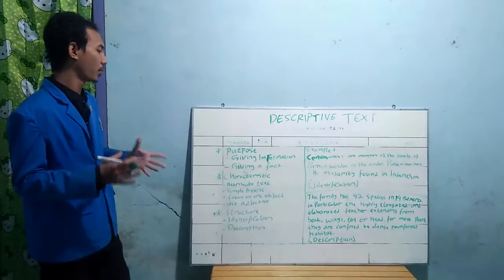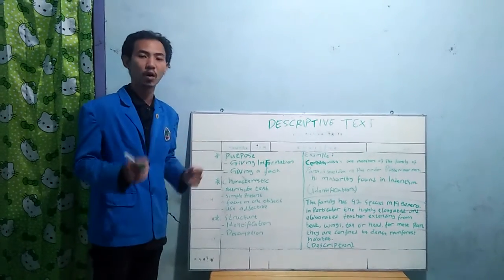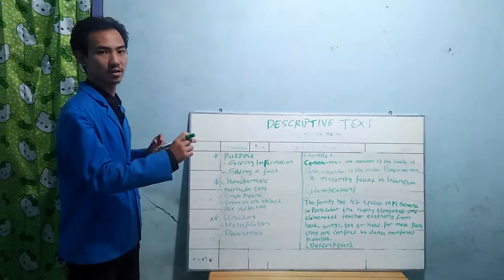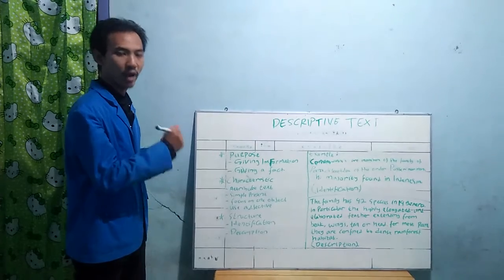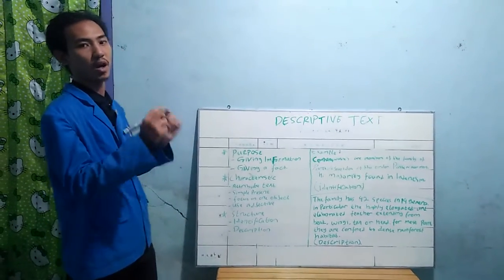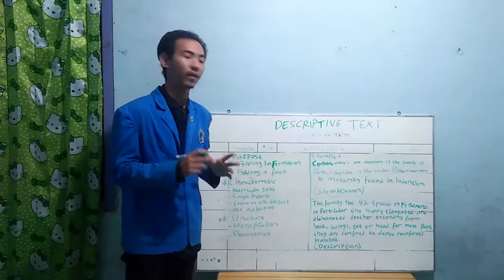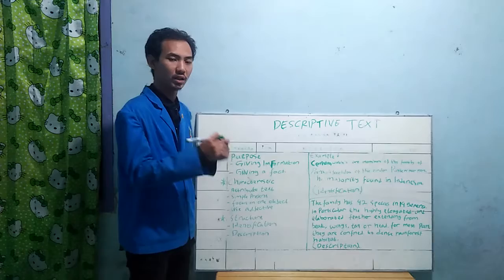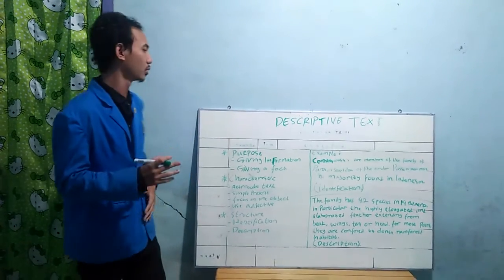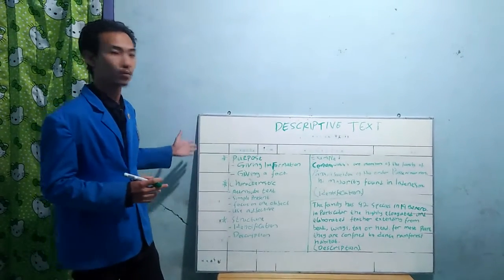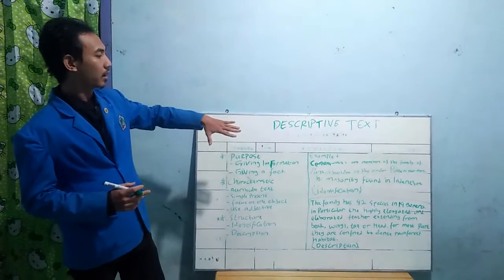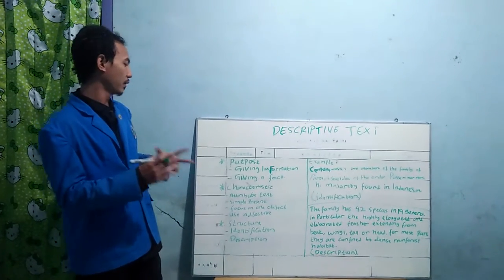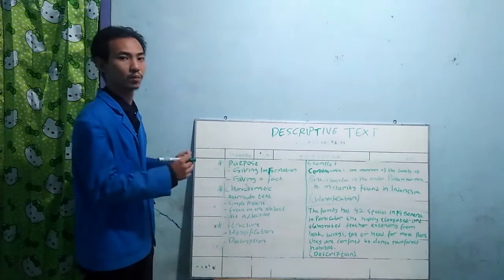What is the purpose of descriptive text? The first and most important purpose is to give information. Descriptive text is designed to give information — you write it on a piece of paper and send it to other people. The next purpose is to give facts. Of course, when you want to describe objects, you need to give facts. For example, if you want to describe this white bird, you know its color — that is a fact. So, giving information and giving facts are the purposes of descriptive text.